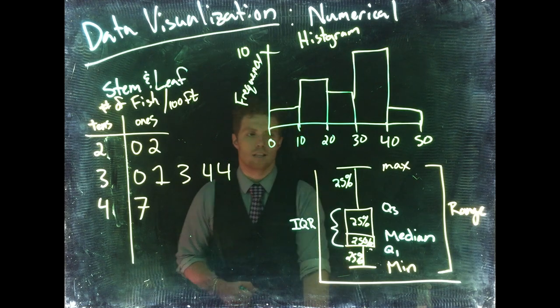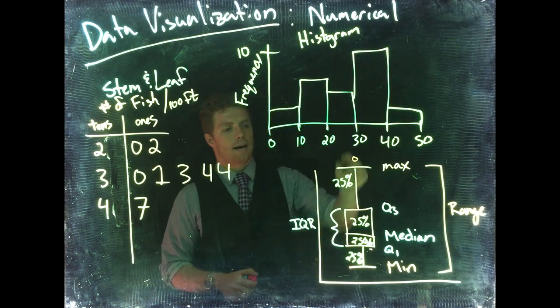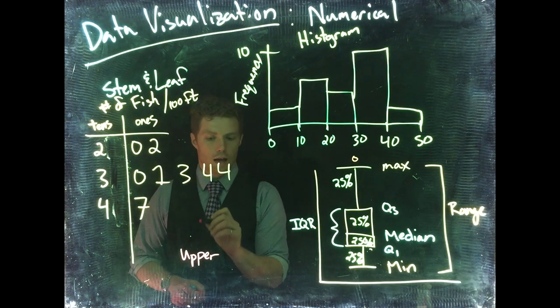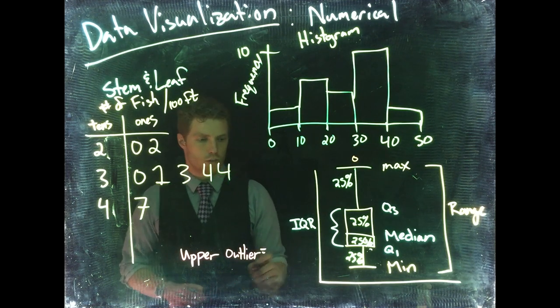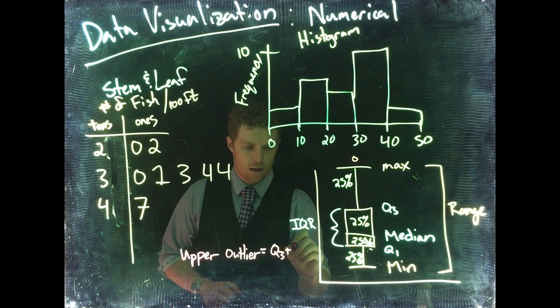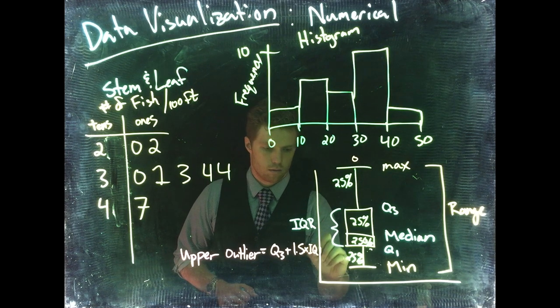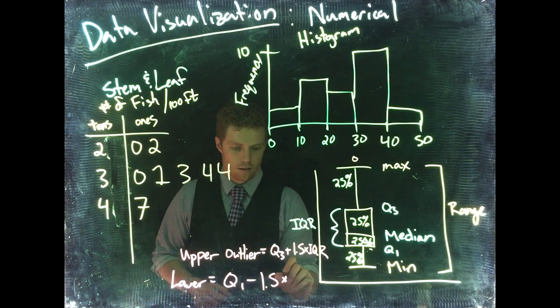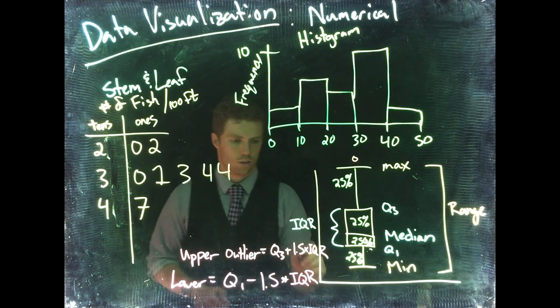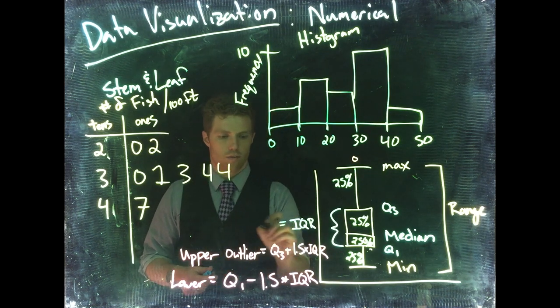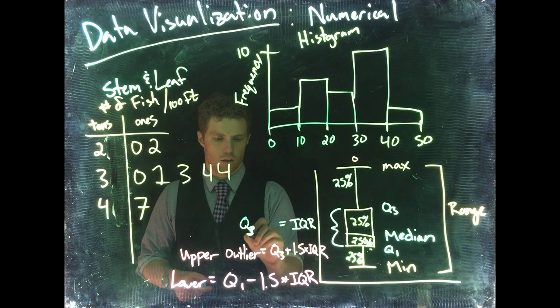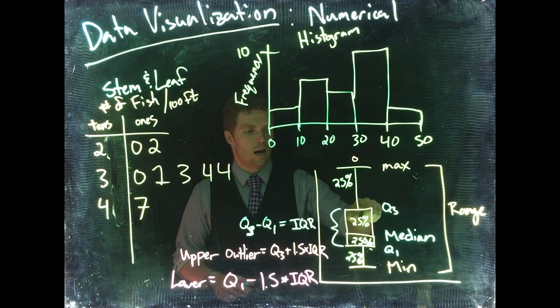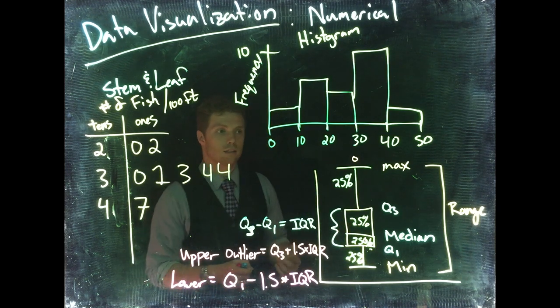From this, we can also learn what an outlier is. Sometimes you'll see an outlier as a little circle dot above or below the maximum or the minimum. So the upper outlier equals Q3 plus 1.5 times IQR. And to be really specific, the IQR is equivalent to Q3 minus Q1.